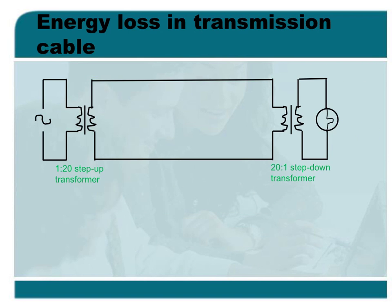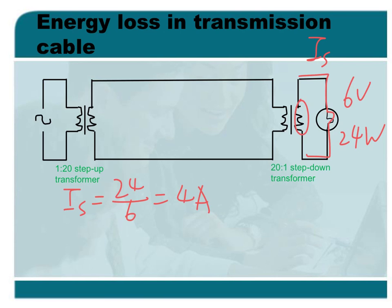Now the lamp needs 6V and it will give out 24W. First we need to find out the current passing through the lamp. It is supplied by the secondary coil of the transformer, that means IS. IS equals 24W over 6V, that means the lamp will get 4A.